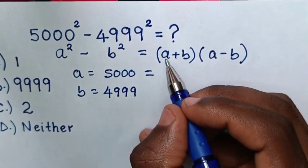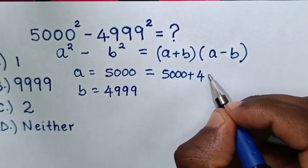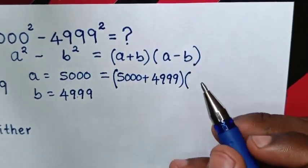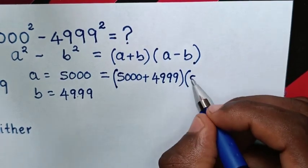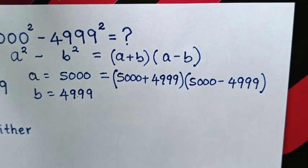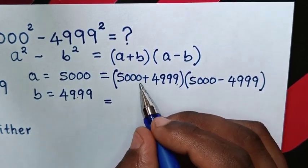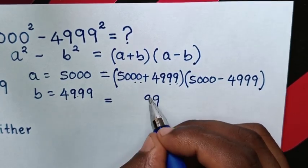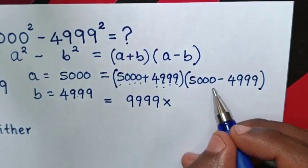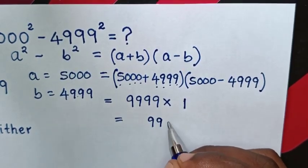Then this is equal to a plus b times a minus b. It will be 5000 plus 4999, times 5000 minus 4999. So 9 plus 0 is 9, 9 plus 0 is 9, 9 plus 0 is 9, 4 plus 5 is 9 — giving 9999. Then times this minus this, which is 1. So it will be equal to 9999.